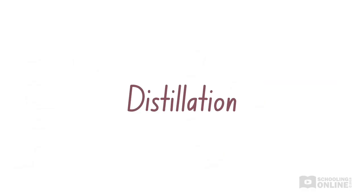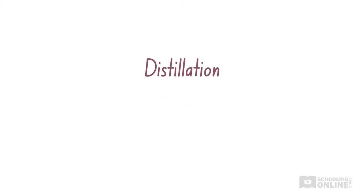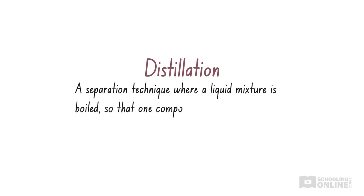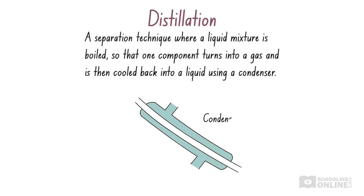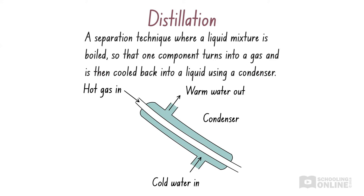Distillation is another way to separate two substances by their boiling points. It is a separation technique where a liquid mixture is boiled so that one component turns into a gas, which is then cooled back into a liquid and collected in a separate container. The other components remain in the original container as they do not evaporate. A condenser is used to cool the gas — it is made of two glass tubes. Cold water enters the bottom, flows through the outer tube, and exits the top as warm water. The gas cools as it passes through the inner tube and condenses into a liquid. Distillation is often used to separate two miscible liquids with a large difference in boiling points, or to separate mixtures of soluble solids and liquids.